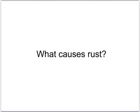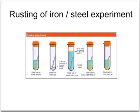But what actually causes things to rust? We can do an experiment to try and investigate this. This diagram describes a classic school experiment to show what causes rusting. In each tube there's a steel nail put into different conditions to see which particular factors cause rusting, or which combination of factors.